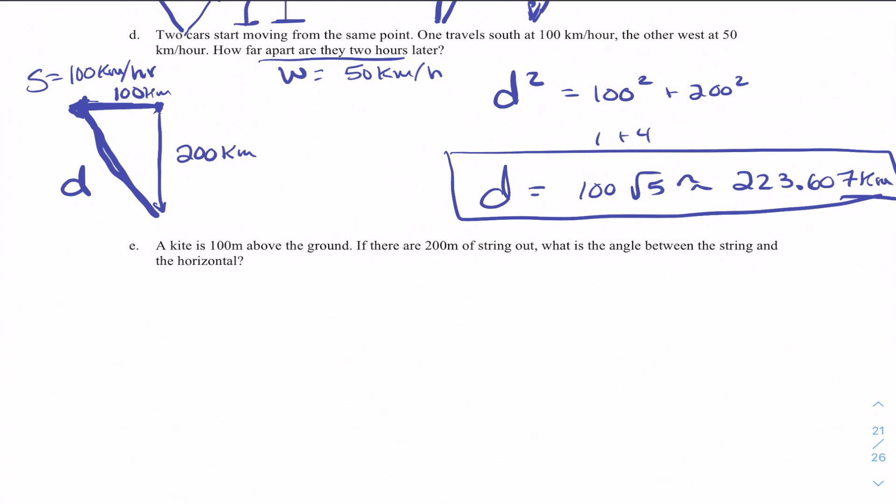Last type of story problems. A kite is 100 meters. Let's see. Let's draw me a fancy kite. A kite is 100 meters above the ground. If there are 200 meters of string out. So here's the string for a person holding it. 200 meters. That's a lot of string. At what angle is between that person and the horizontal.